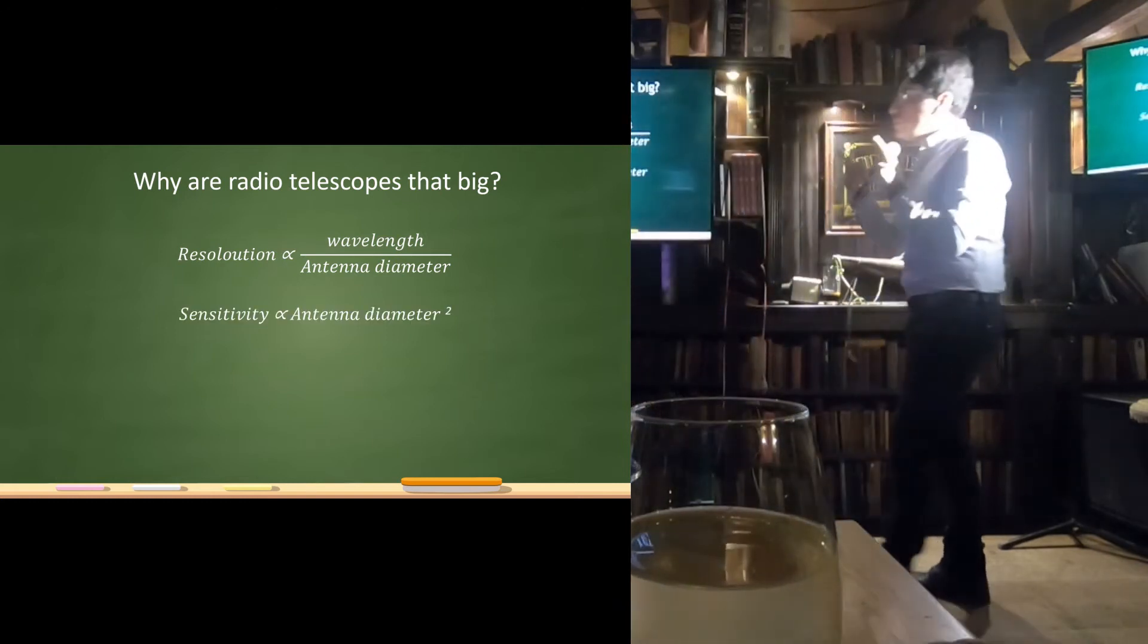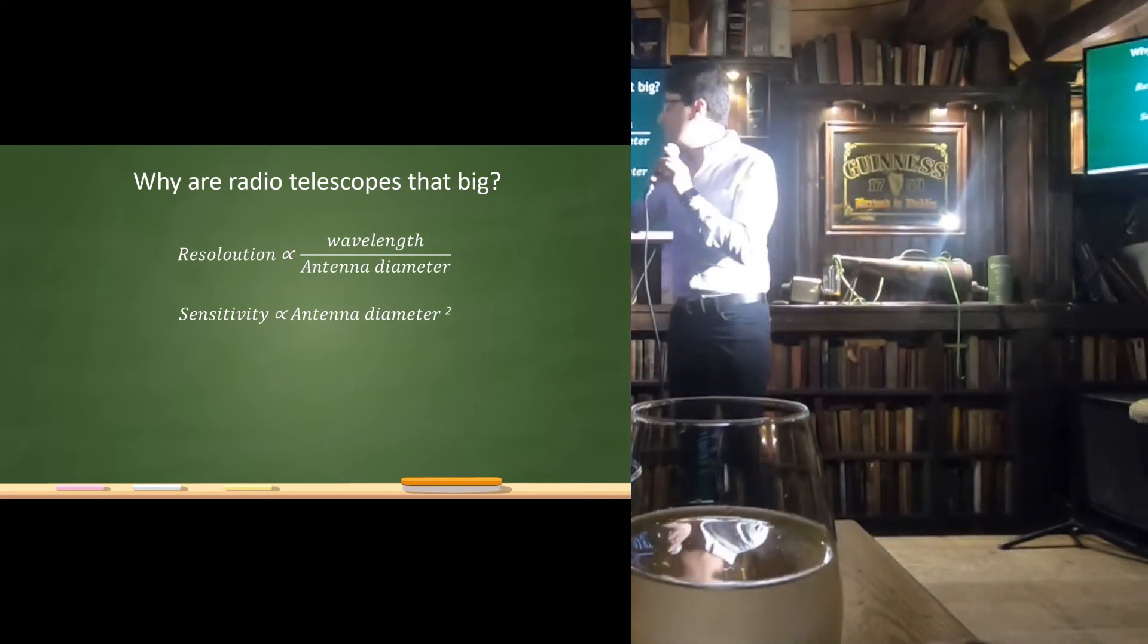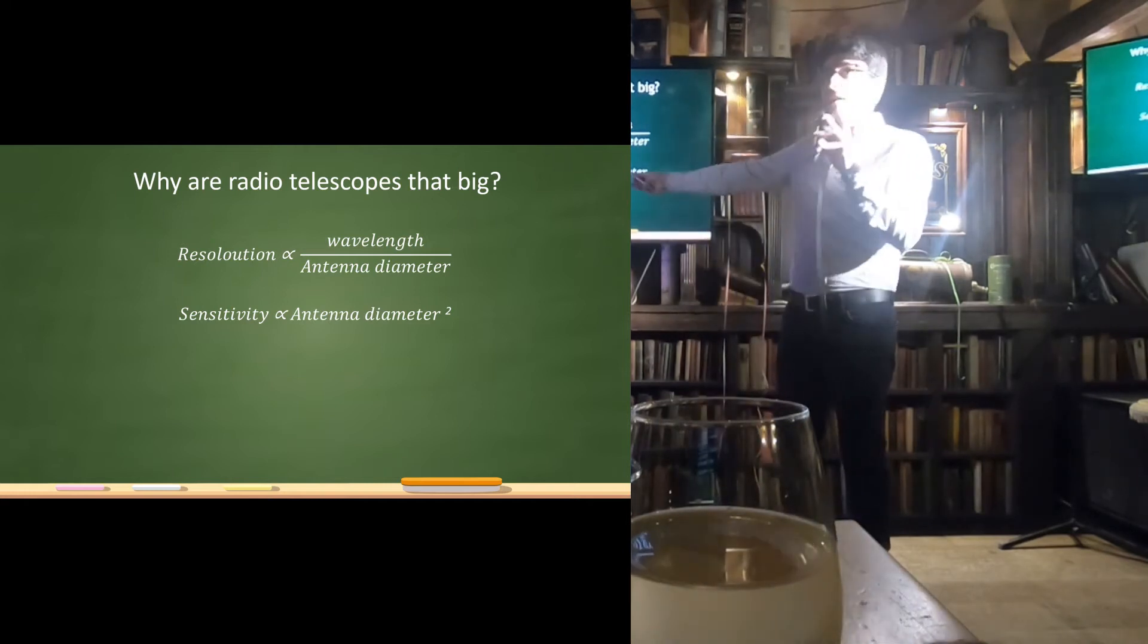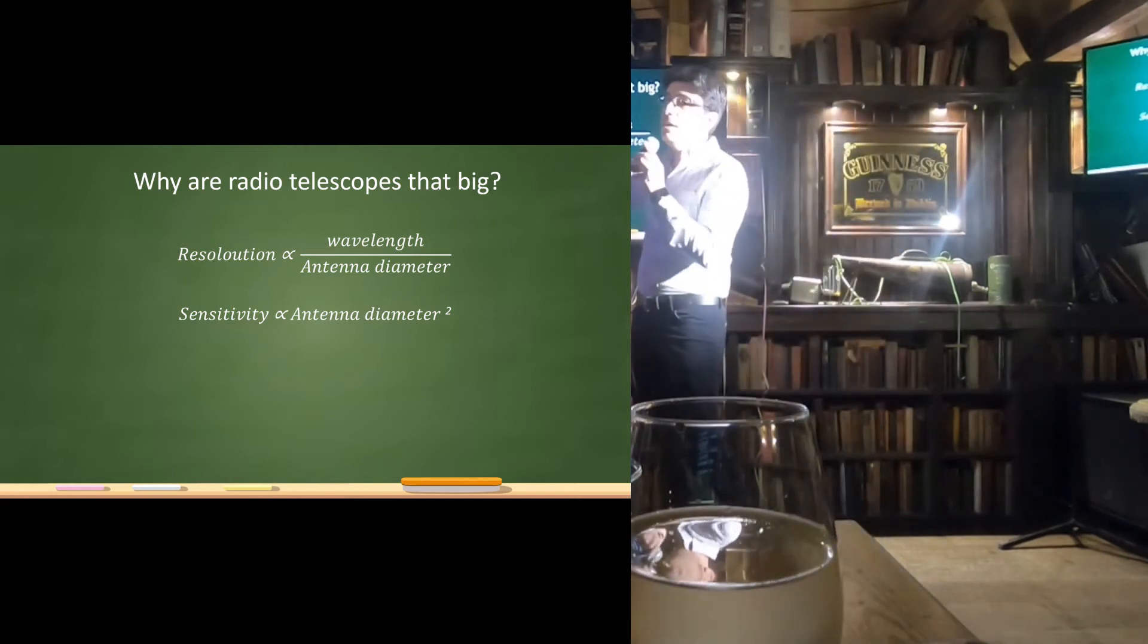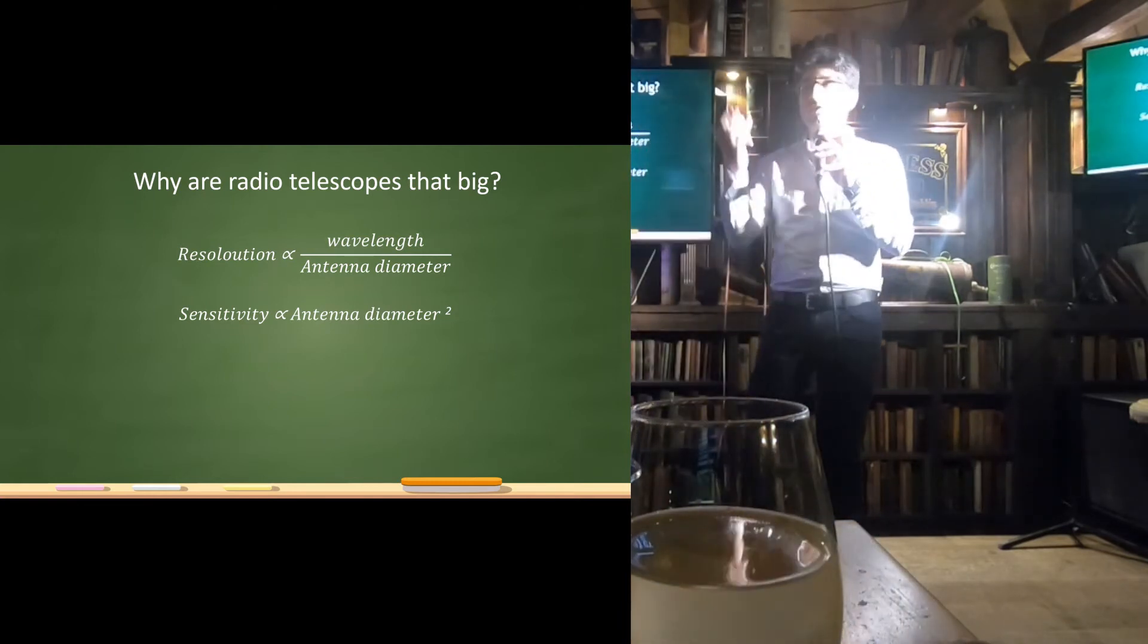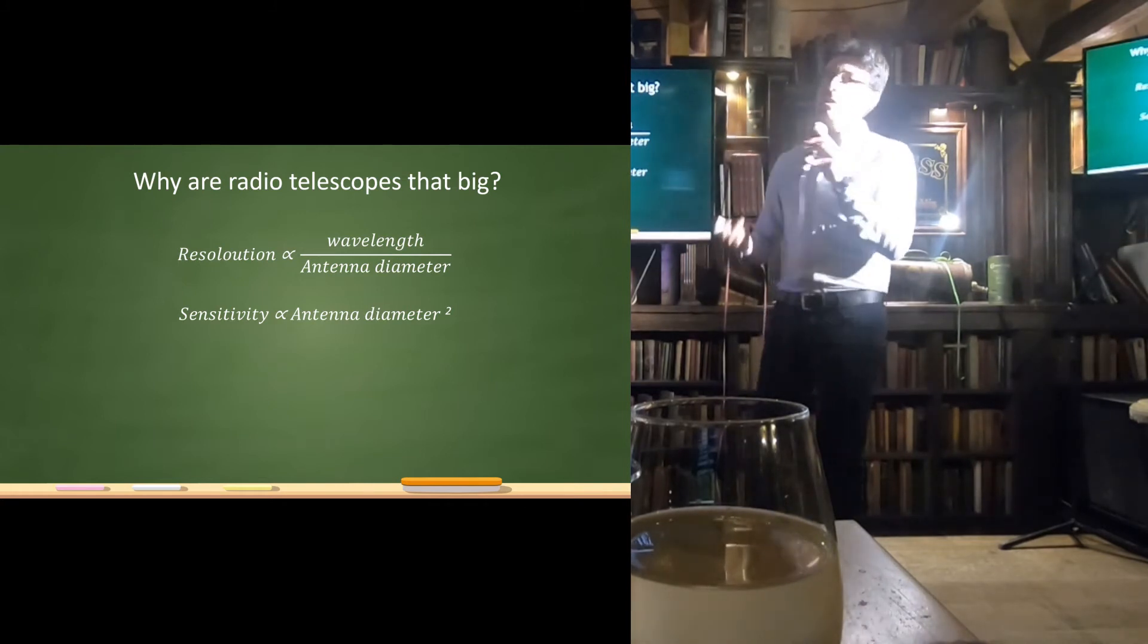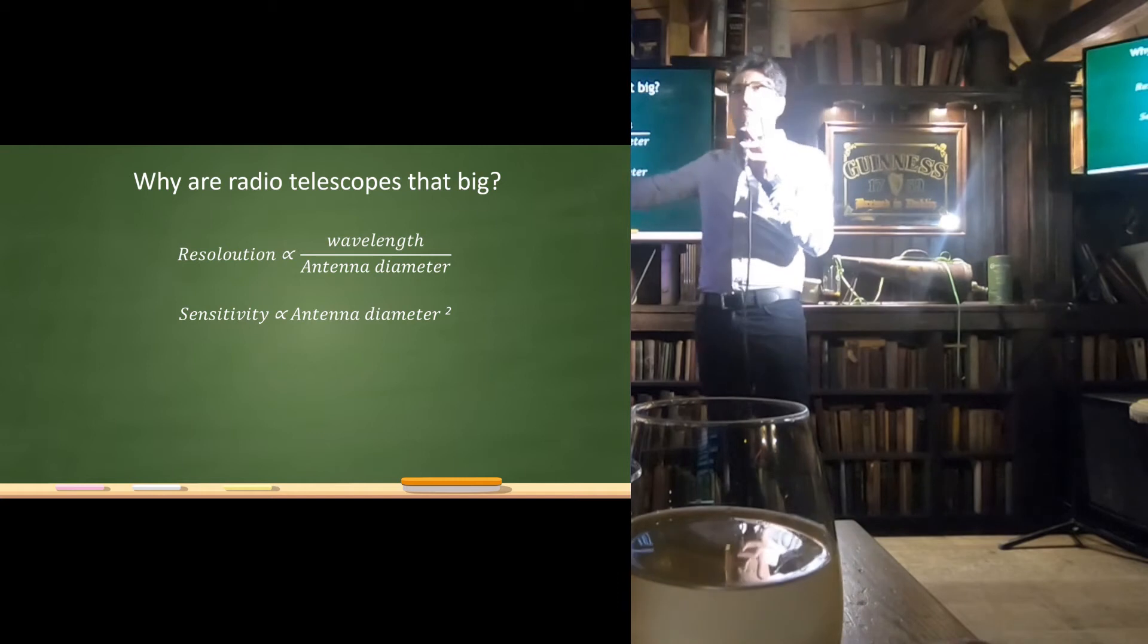The second reason is because of sensitivity. Sensitivity, again, is proportional to the antenna diameter. That means the higher, the larger the dish, the better the sensitivity. The sensitivity is the ability of an instrument, any instrument, to detect faint sources, faint objects. Why do we really need that much sensitivity in a radio telescope that we build such huge antennas?